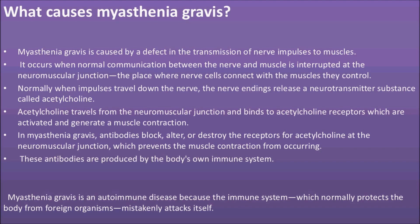But in Myasthenia Gravis, antibodies block, alter, and destroy the receptors for acetylcholine at the neuromuscular junction, which is the space between neurons and muscles. This prevents muscle contraction from occurring. These antibodies are produced by the body's own immune system, which is why Myasthenia Gravis is an autoimmune disease — the immune system, which normally protects the body from foreign organisms, mistakenly attacks itself.